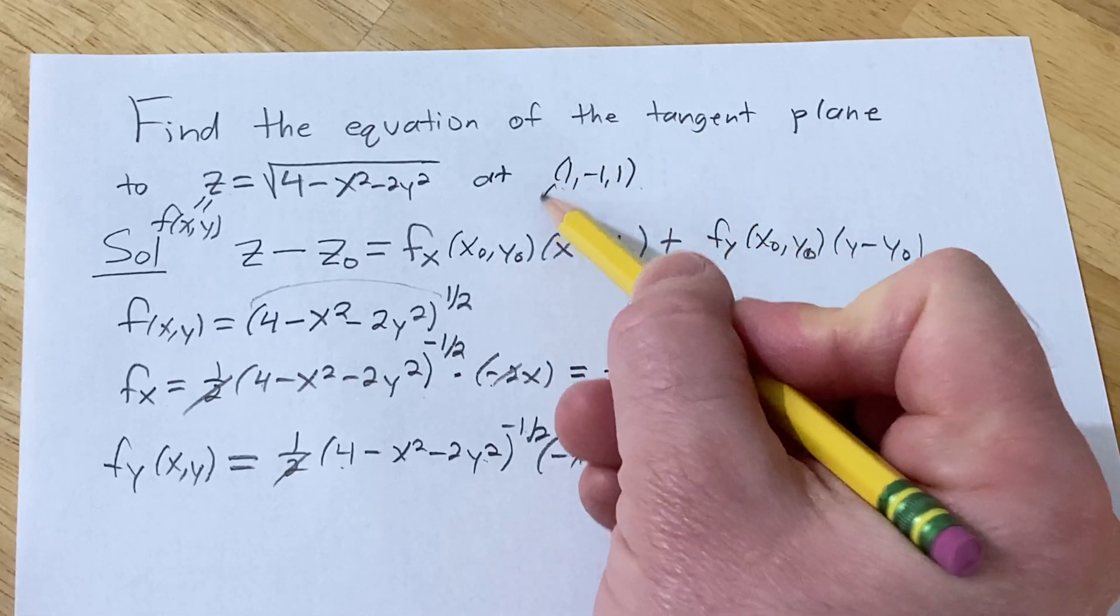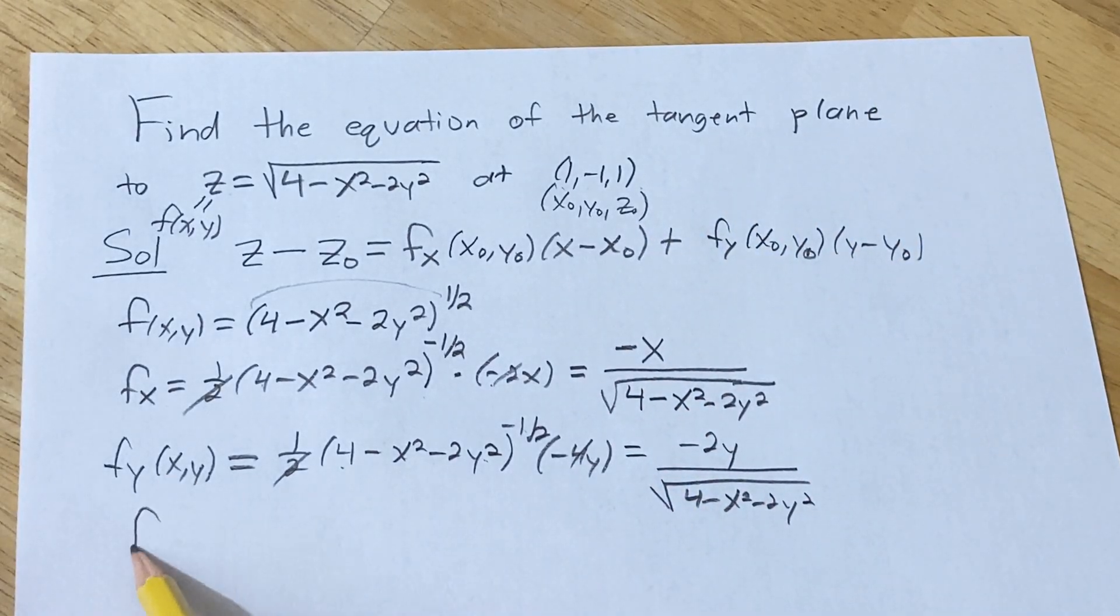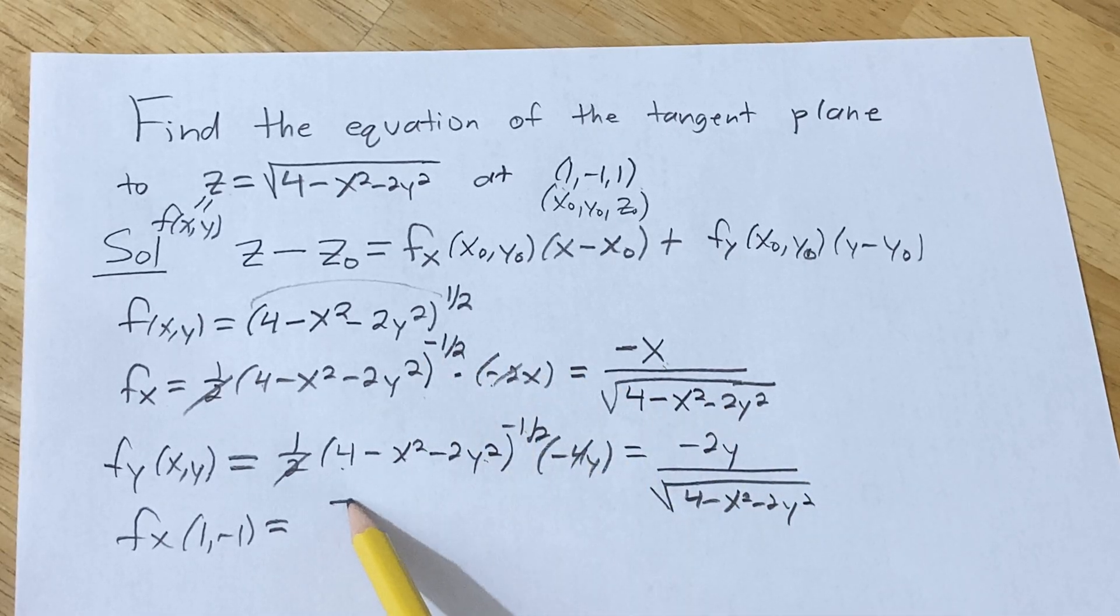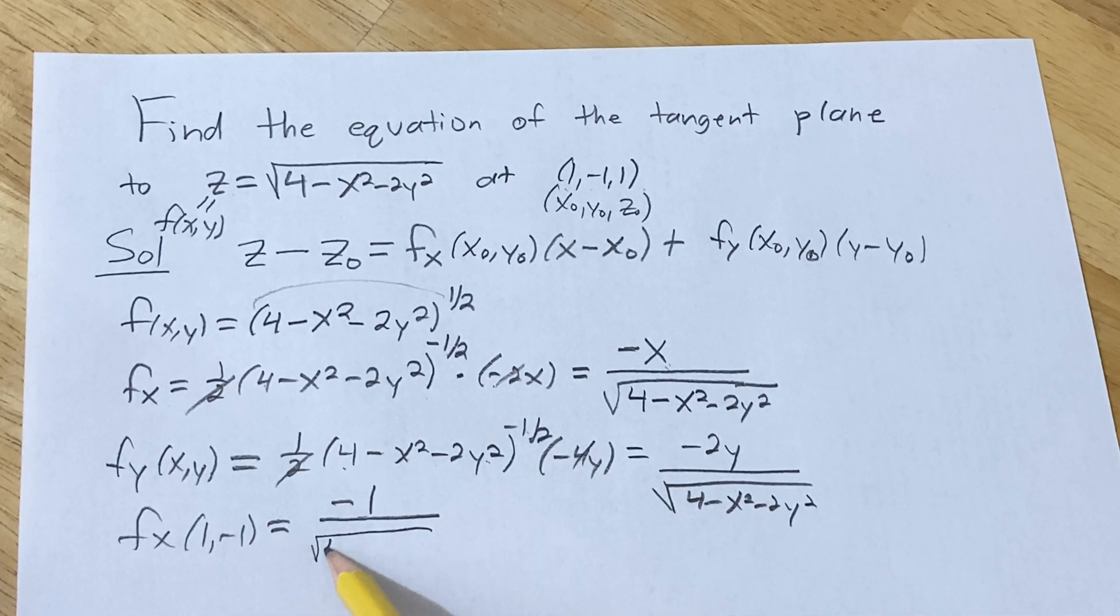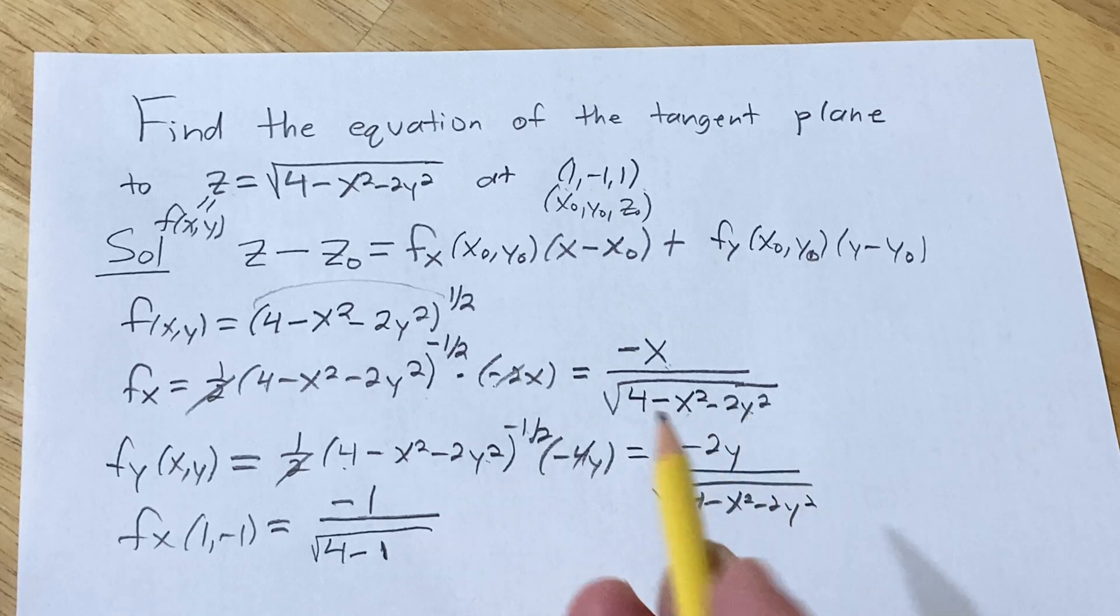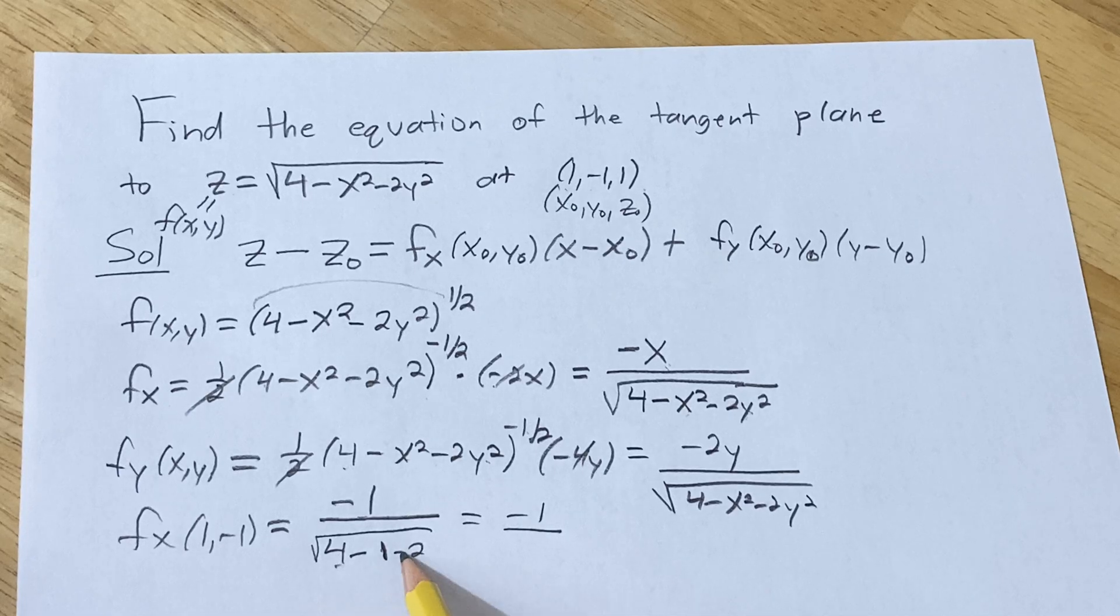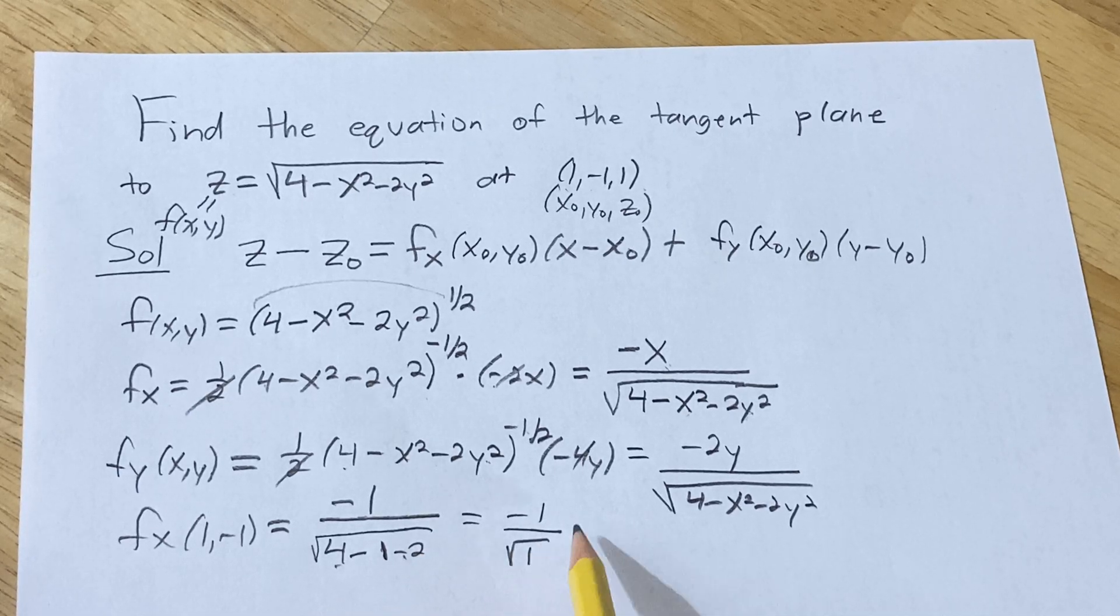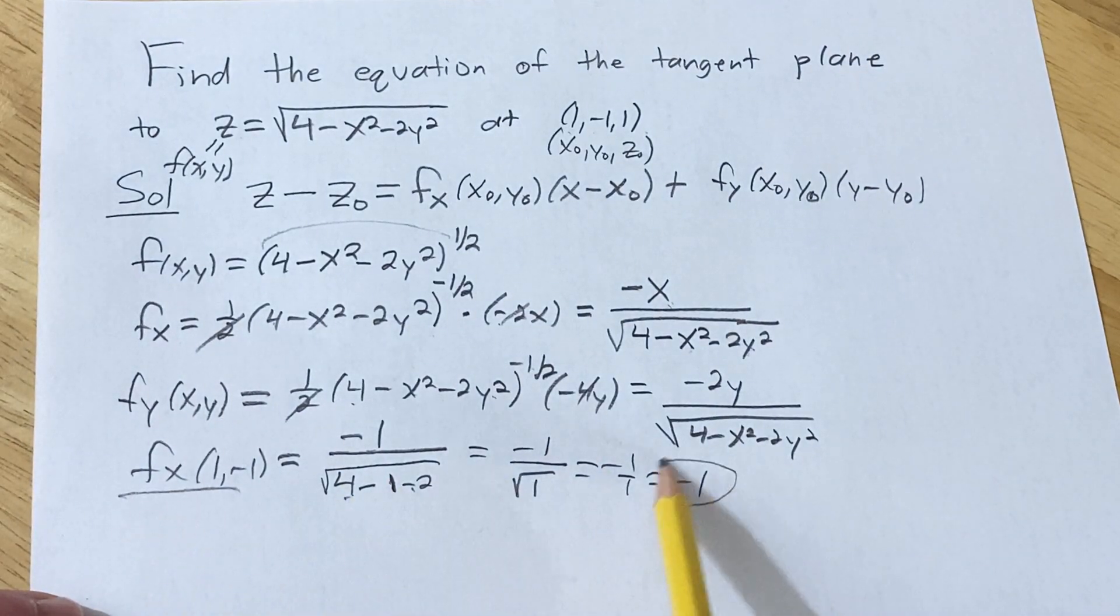In this particular problem, this is our x naught, y naught, and z naught. So let's look at fx at (1, -1). So plugging that in here, x is 1, so we get -1 over the square root of 4 minus 1 squared is 1, and then y squared, that's going to be (-1)² which is also 1, so just minus 2. So -1 over, 4 minus 3 is 1, so we just get -1 over 1, so we get -1. So that's fx at (1, -1).